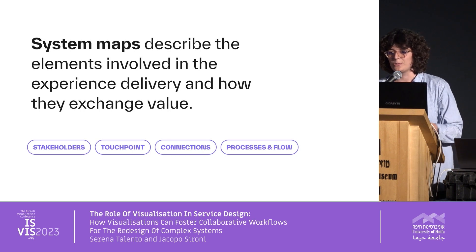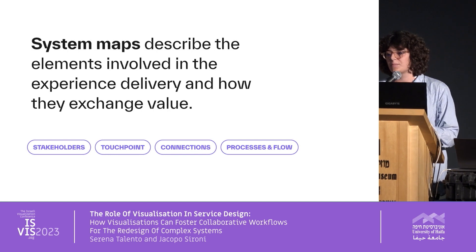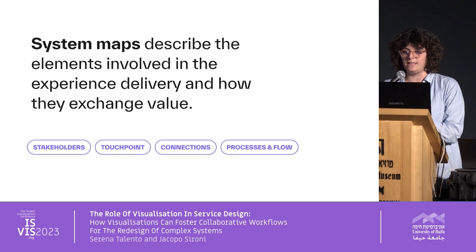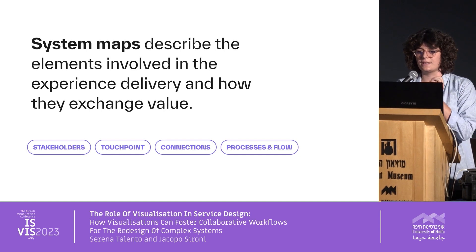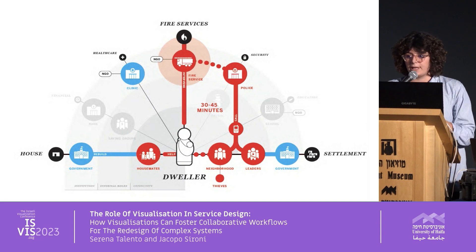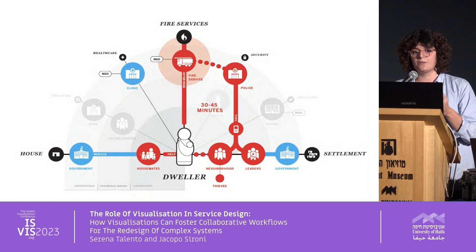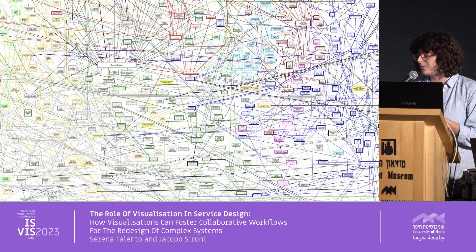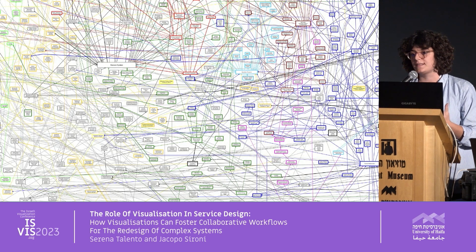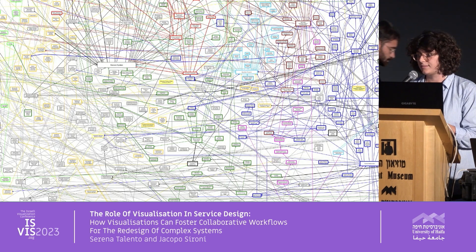To go into more detail with practical examples, we use tools like system maps. System maps describe all the elements involved in experience delivery — we have different bricks like stakeholders, the people involved, the touchpoints they use that can be apps or physical objects. We understand how these things are connected, how they exchange values, and what processes connect all the different elements. Defining the right level of granularity is extremely important because it determines whether the map is actually actionable and brings value to the user, and whether it really makes conversation happen. If you try to map everything in the system, it becomes too complex to read and especially too complex to bring users in to talk and discuss.